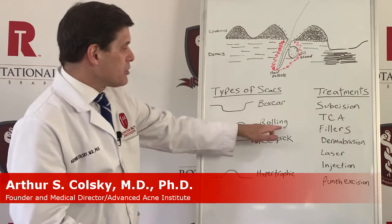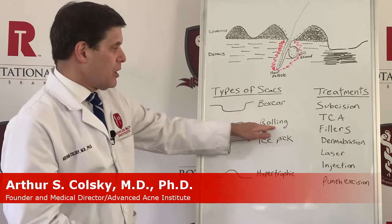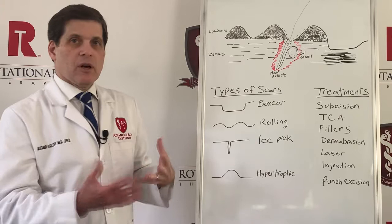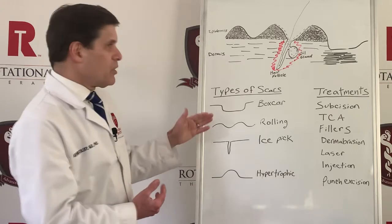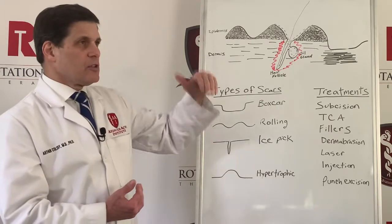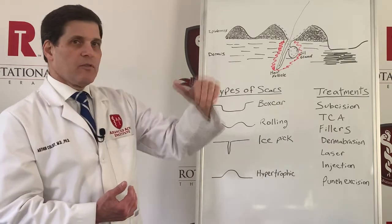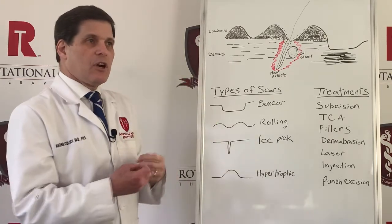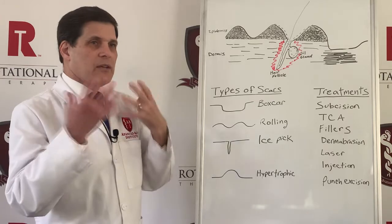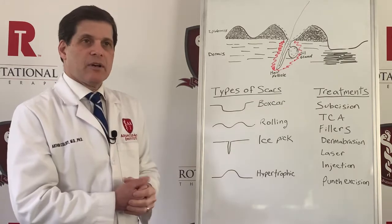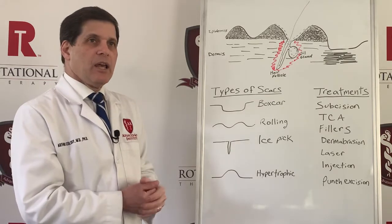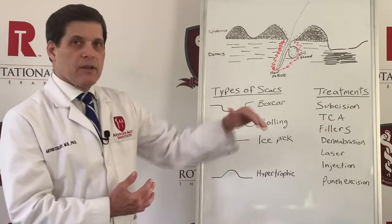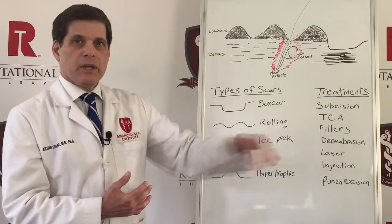Another type of scar is called the rolling scar. In a rolling scar, the skin surface looks very uneven, and this can occur when somebody's had a lot of breakouts on their skin and they heal with this very uneven rolling pattern.